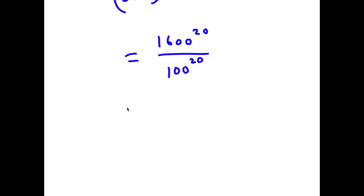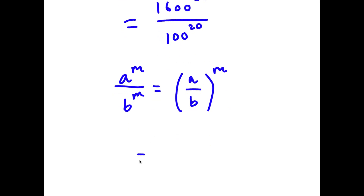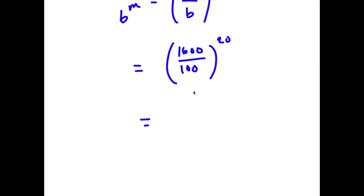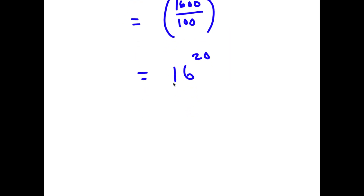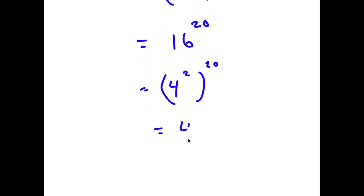If I have a to the power of m over b to the power of m, this equals a over b to the power of m. So 1600 to the power of 20 over 100 to the power of 20 is 1600 over 100 to the power of 20. And 1600 over 100 is 16, so I have 16 to the power of 20. Now 16 is the same thing as 4 to the power of 2, so I have 4 to the power of 2 to the power of 20, which is 4 to the power of 40.